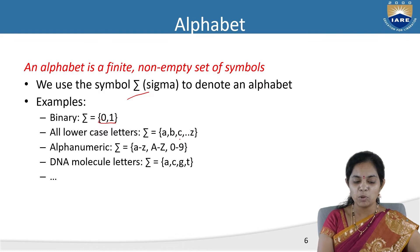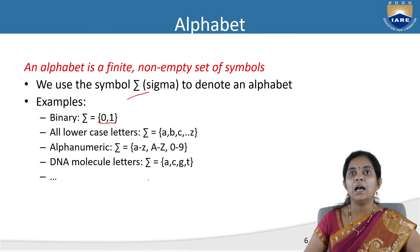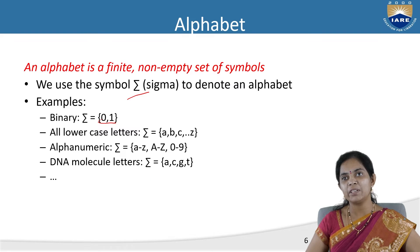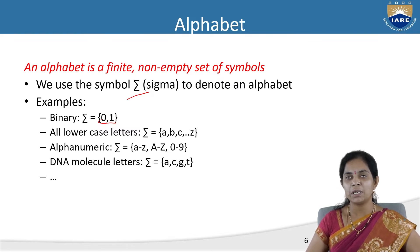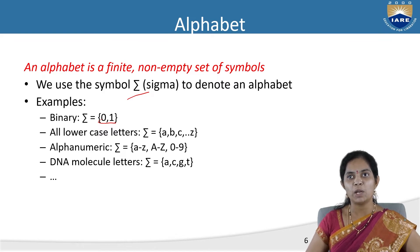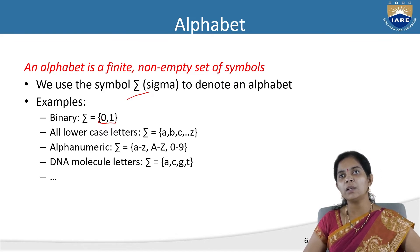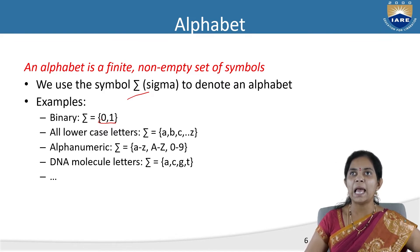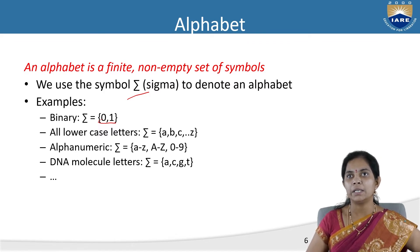One more example is alphanumeric, which contains alphabets A to Z (capital), and 0 to 9. Another example is DNA molecule letters. These are all called alphabets, and the entire set of alphabets is represented by sigma.